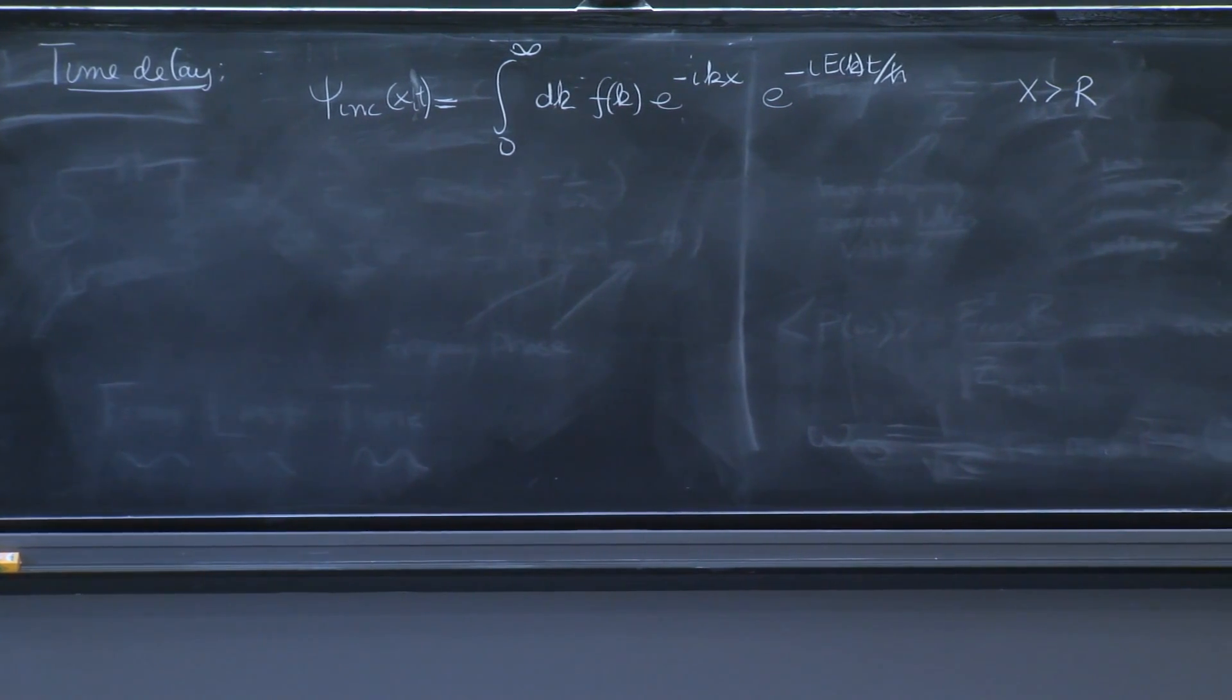And this would be valid for x greater than r, again, as a solution of the Schrodinger equation. You see, it's a free wave. There's nothing extra from what you know from the de Broglie waves we studied a long time ago.